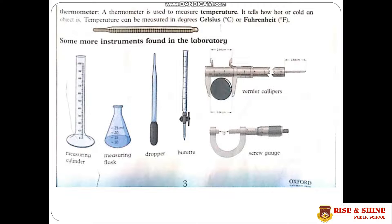Some other instruments that are used in laboratories are as follows. Measuring cylinder is used to measure the volume of a liquid for use in reactions. Measuring flask is used for precise dilution and preparation of standard solutions.